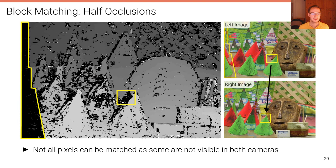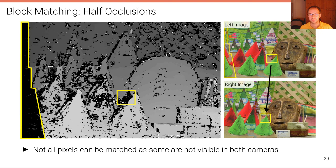Not all pixels can be matched, as some may not be visible in both cameras — this is called half-occlusion. For example, a region visible in the left image may have left the right image's field of view entirely. Similarly, regions behind an object in the left image may be occluded in the right image. These show up as black regions in the disparity map, while incorrect estimates appear as noise sparkles.